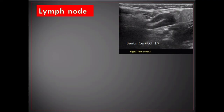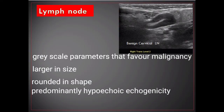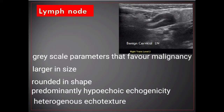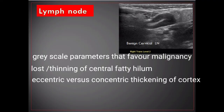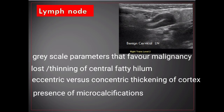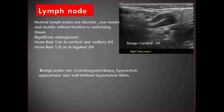Significant enlargement is considered if more than 1 centimeter in cervical and axillary lymph nodes, and more than 1.5 centimeters in inguinal lymph nodes. Gray-scale features suggestive of malignancy: larger size, rounded shape, predominantly hypoechoic — although metastatic nodes from papillary thyroid carcinoma tend to be hyperechoic — heterogeneous echotexture, loss of central fatty hilum, eccentric versus concentric cortical thickening, microcalcifications, necrosis, and ill-defined capsular margins. Color Doppler features of malignancy: peripheral or mixed peripheral-central vascularity, high-resistance waveform, and chaotic vessels.